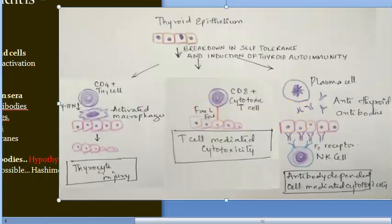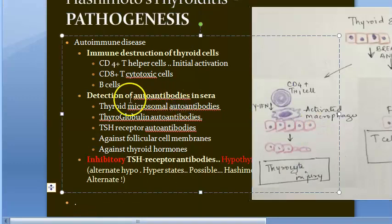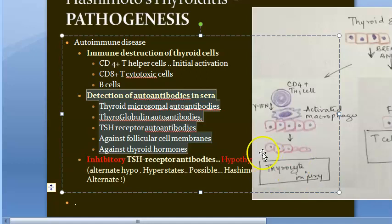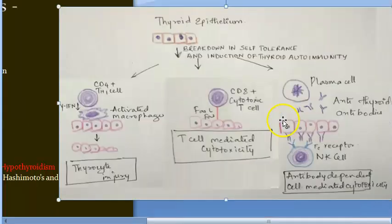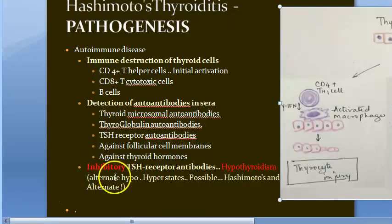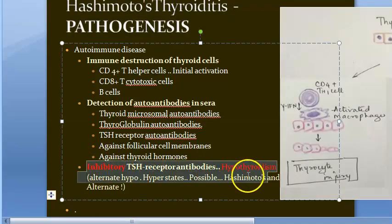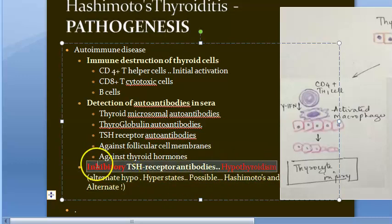The antibodies detectable in the serum include autoantibodies against thyroid microsomes (microsomal antibodies), thyroglobulin antibodies, and TSH receptor antibodies — including antibodies against follicle cell receptors and against the hormones themselves. Inhibitory TSH receptor antibodies lead to hypothyroidism.